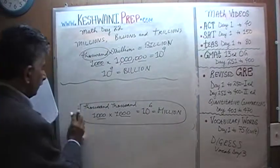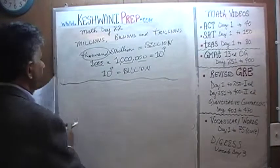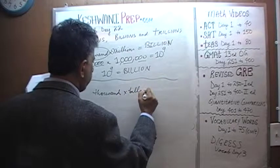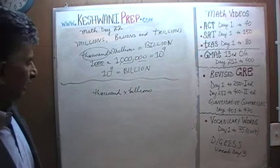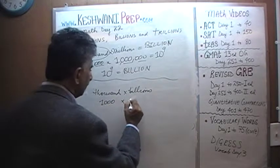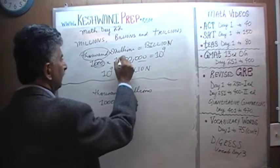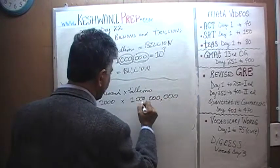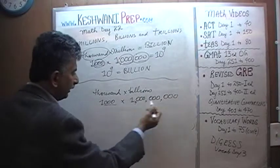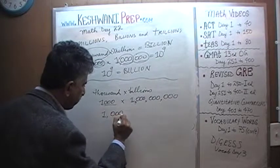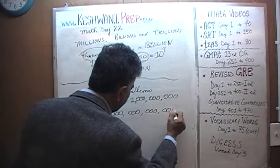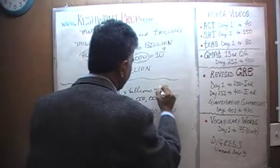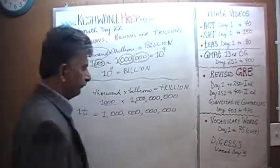Let's continue — we're almost done. What happens if we have a thousand billion? A billion, as we know, has nine zeros: 3, 6, and 9. A thousand billion is going to have 12 zeros. That gives us a trillion — a thousand billion is a trillion — and as you can see it has 12 zeros.